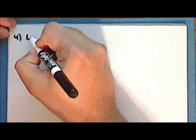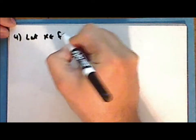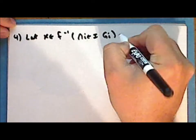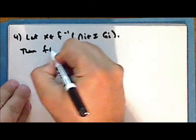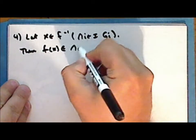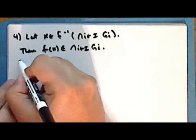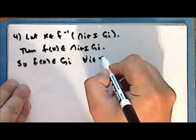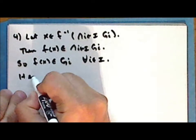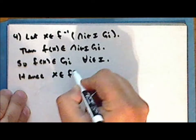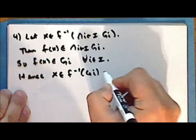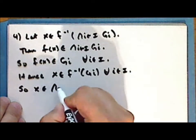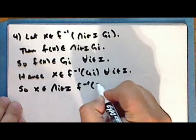So fourth statement: let x be a point in the inverse image of an intersection of subsets of the codomain. Then f of x is in this intersection, and so the point f of x is in the set g sub i for every index i. And hence, the point x is in the inverse image of the set g sub i for every index i, and so x is in the intersection of the inverse images of the sets g sub i.